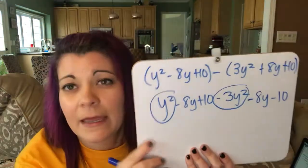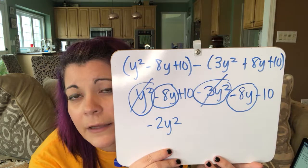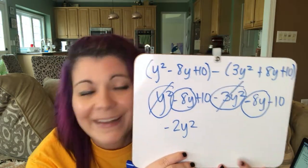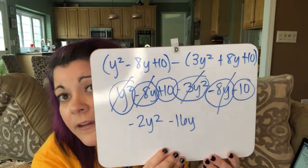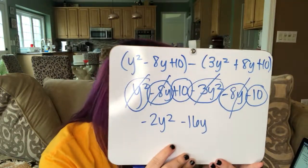Now we can combine like terms. y squared minus 3y squared — if there's no coefficient, it's understood as 1 — so 1 minus 3 is negative 2, giving us negative 2y squared. Then negative 8y minus 8y: negative 8 minus 8 is negative 16, so minus 16y. And then positive 10 minus 10 is 0. So our answer is negative 2y squared minus 16y. And that is how you add and subtract polynomials. Thank you for joining.